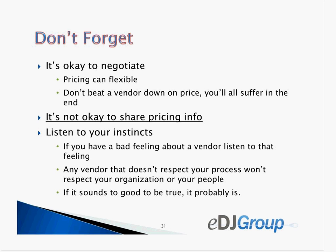Somebody asked: where do you identify new vendors? There are a lot of places. Appercie, eDiscovery Journal — we have a database called the Matrix. You need to talk to your colleagues, your corporate clients, other law firms. Go to legal tech conferences. Read blogs. Join eDiscovery groups — from LinkedIn groups to Women in eDiscovery chapters to all kinds of seminars. You'll get to know other people who are like-minded, and that's always a great source — other people who actually use these products.